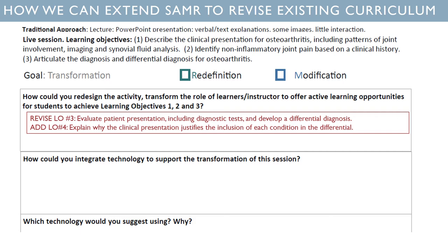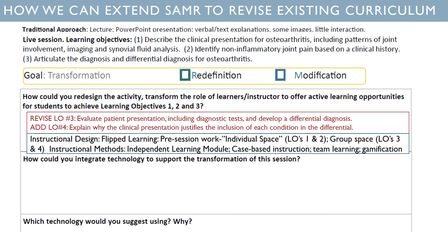I'm going to revise the third objective and state it as: evaluate patient presentation including diagnostic tests and develop a differential diagnosis. Then I'm going to add a fourth objective: explain why the clinical presentation justifies the inclusion of each condition in the differential. This ensures that students will be operating at a higher order level of thinking. Remember the goal here is transformation — we want to make sure the instructor's role is less central and the learner's role is more central. A way to achieve that is through flipped learning: students would be given appropriate resources, perhaps an independent learning module, to help them achieve learning objectives one and two before they come to class. Then in the group space, the instructor could facilitate case-based learning using a team approach and even an element of gamification.